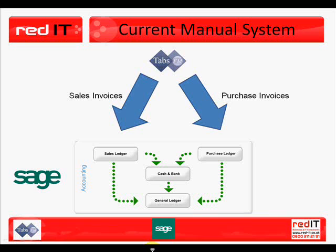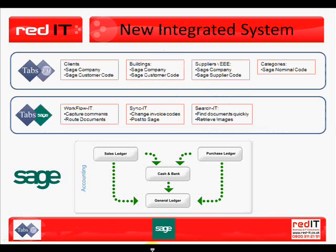The current system from Tabs to Sage is a manual one, so you normally raise your sales invoices and purchase invoices in Tabs and then re-key them into Sage. The new integration module has a middle layer, Tabs to Sage, which is made up of three components: Workflow it, Sage Sync it, and Search it, which I'll come on to shortly.